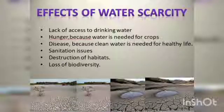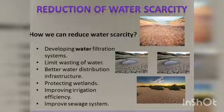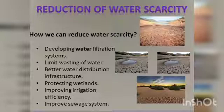Lastly, let's discuss how we can reduce water scarcity. There are many measures that should be taken: developing a water filtration system, limiting wastage of water, building better water distribution infrastructure, protecting wetlands, improving irrigation efficiency, and improving the sewage system.